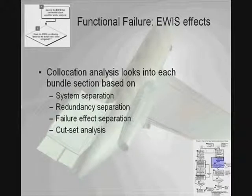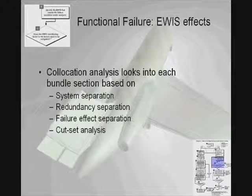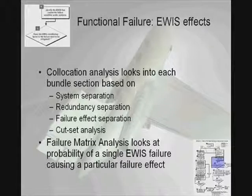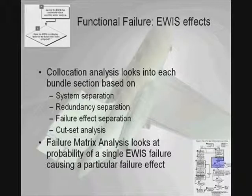In order to evaluate the eWist effects and functional failure, eWistrat co-location analyses look into each bundle section based upon system separation, redundancy separation, failure effect separation, and cut set analysis. Co-location analysis can be paired with failure matrix analyses to look at the probability of a single eWist failure causing a particular failure event.